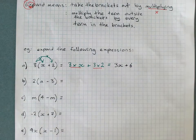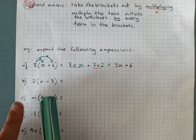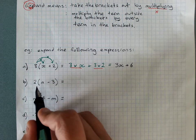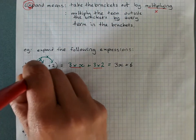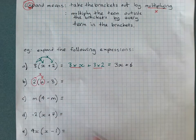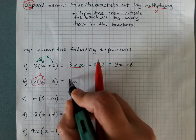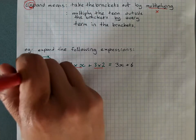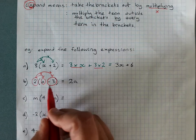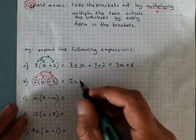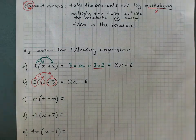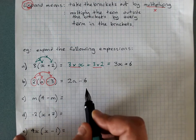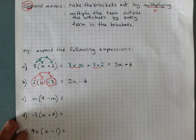Pay attention to negative signs and make sure you do both multiplications. Draw arrows for where you're going to times. The term outside the bracket times the first term: 2 times a is 2a. Then the term outside times the second term — including that negative: 2 times negative 3 is negative 6. Check it on your calculator if you need to. So we write 2a minus 6, and that's the answer. That's expanded — you've removed the brackets by multiplying.